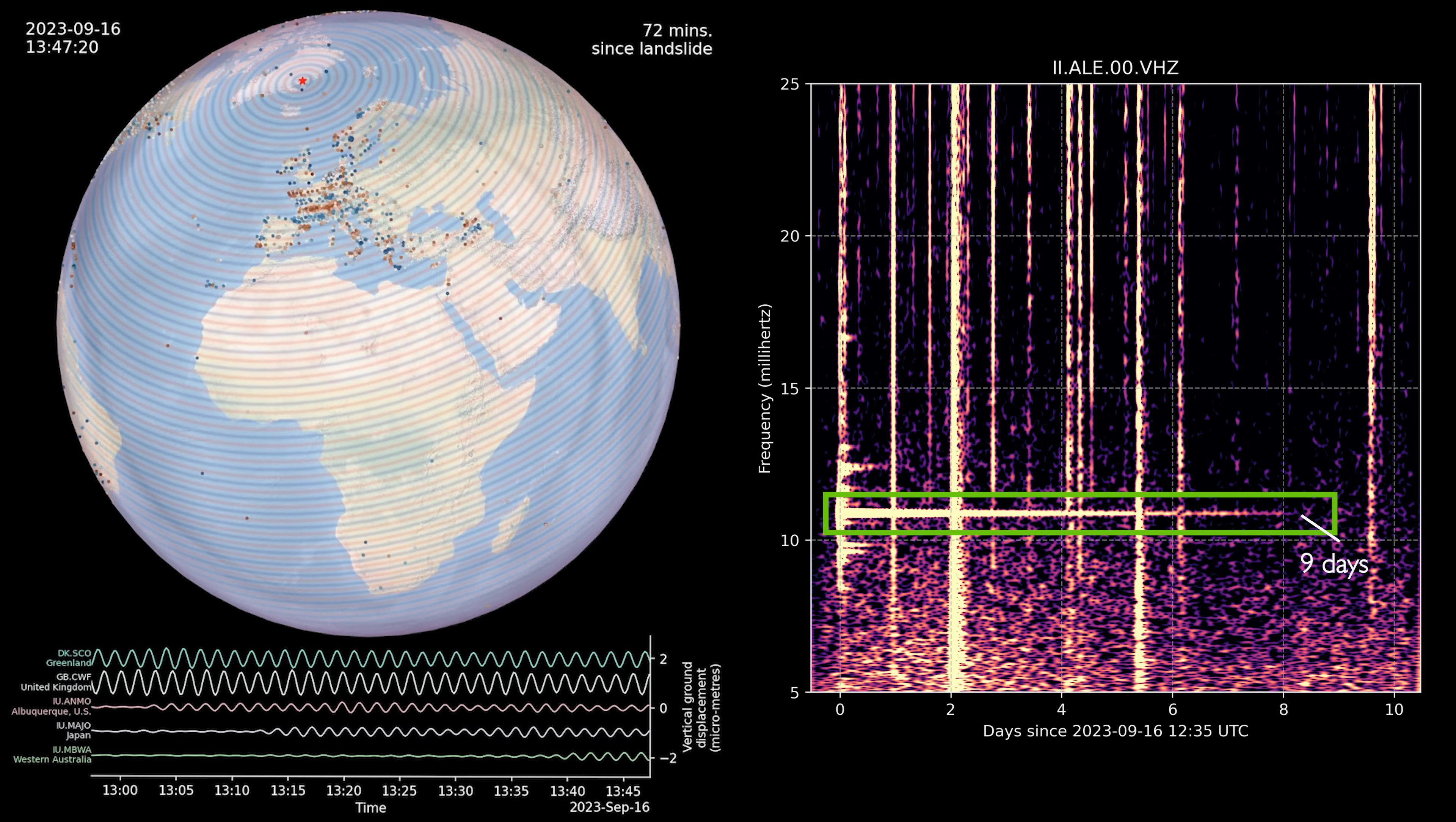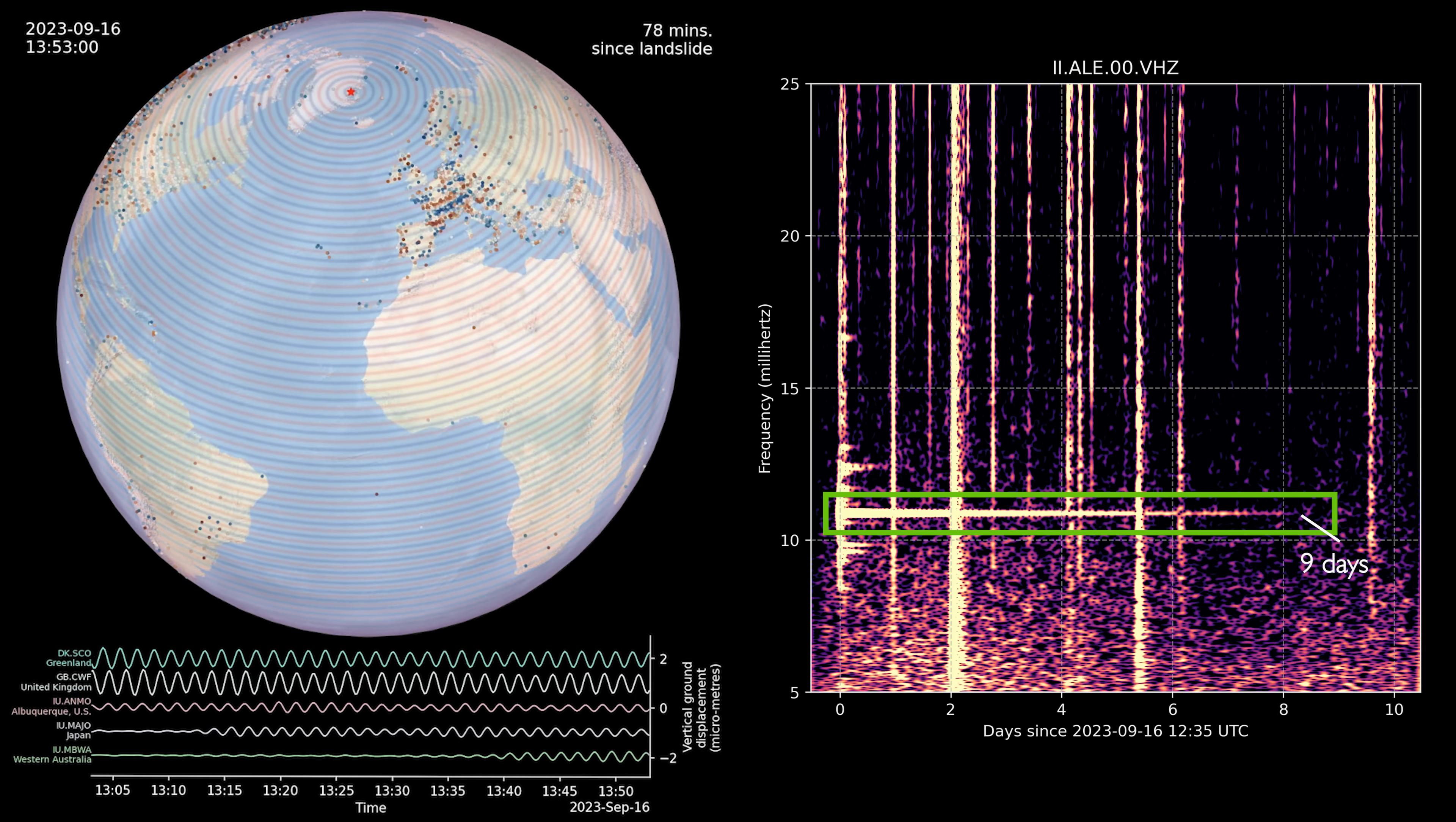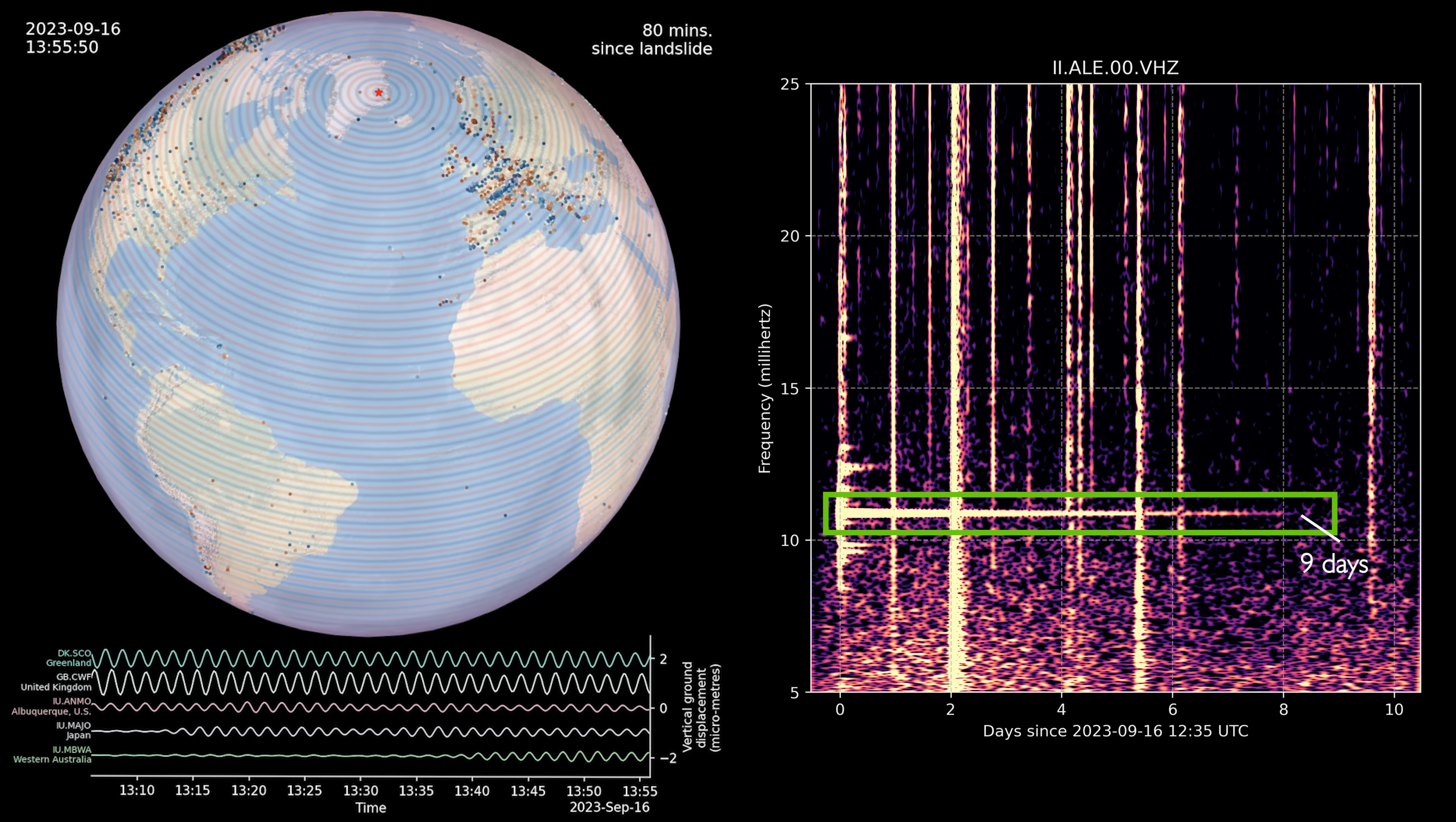It was so unusually long and strange looking, we initially called it an Unidentified Seismic Object or USO for short.